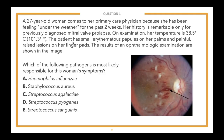We recommend reading the answer choices starting from the bottom and working your way up so you don't get anchored on an early answer without going through all choices. Answer choice E: Streptococcus sanguinous. D: Streptococcus pyogenes. C: Streptococcus agalactiae. B: Staphylococcus aureus. And A: Haemophilus influenzae. We'll give everyone a couple seconds to gather your thoughts and select the answer you think is correct.